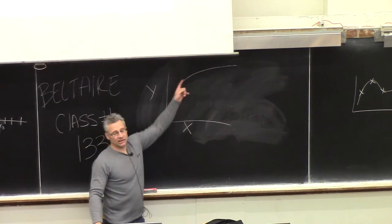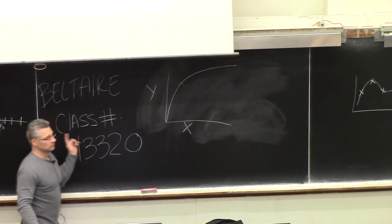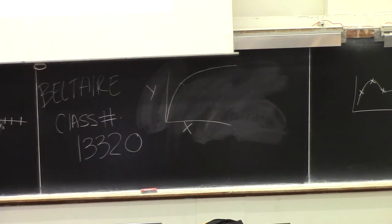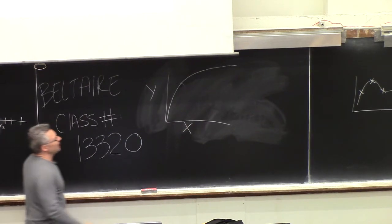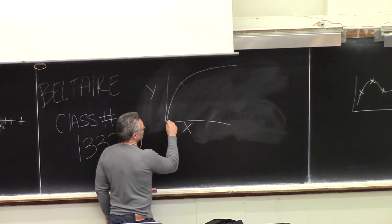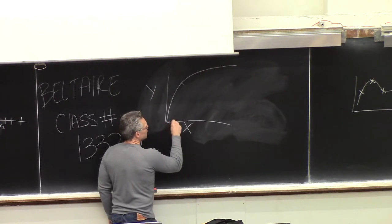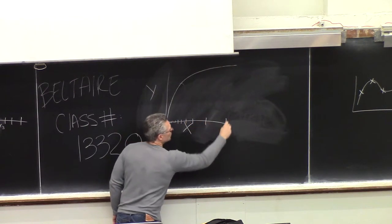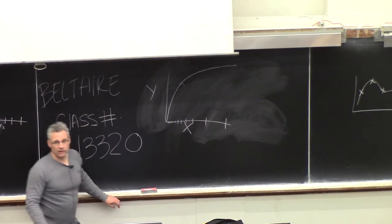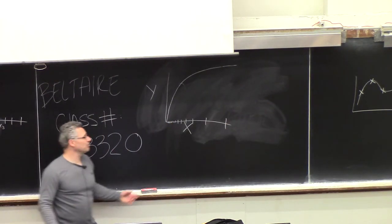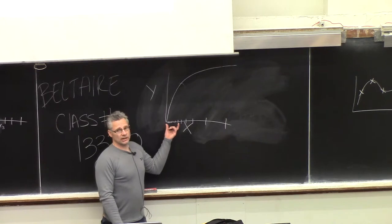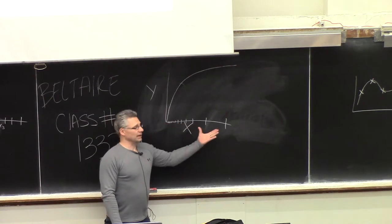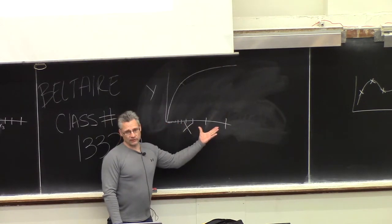The code automatically adjusts h for you. It uses very small step sizes where the solution is changing rapidly, and then when the solution starts changing slowly it takes much bigger steps. This gives a nice compromise between an accurate solution when you need it and speed when you don't.